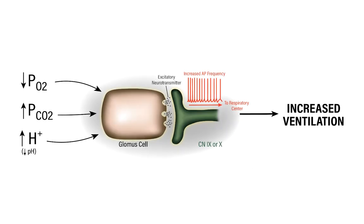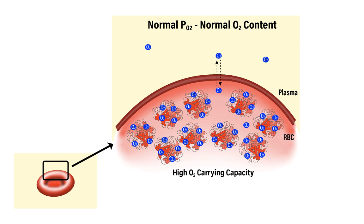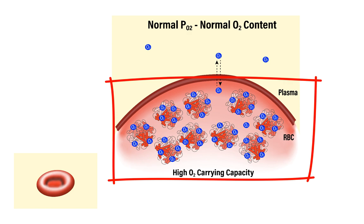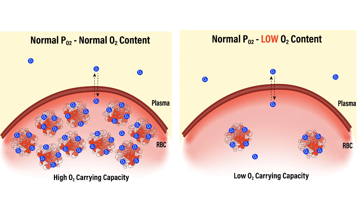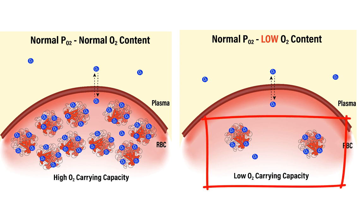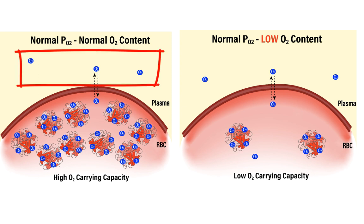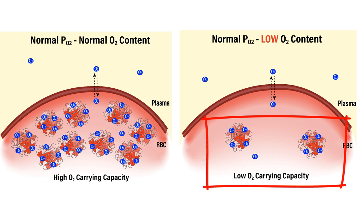It is worth noting that peripheral chemoreceptors are sensitive to the partial pressure of oxygen and not the oxygen content of the blood. Under normal conditions, these two parameters are related — a high partial pressure of oxygen results in a high oxygen content. However, in situations of reduced oxygen carrying capacity, such as anemia resulting in reduced functional hemoglobin or fewer red blood cells, a normal or high oxygen partial pressure is not associated with high oxygen content. Because glomus cells sample dissolved oxygen concentration, determined by the partial pressure of oxygen, they have no way of detecting whether oxygen content is compromised due to reduced carrying capacity.